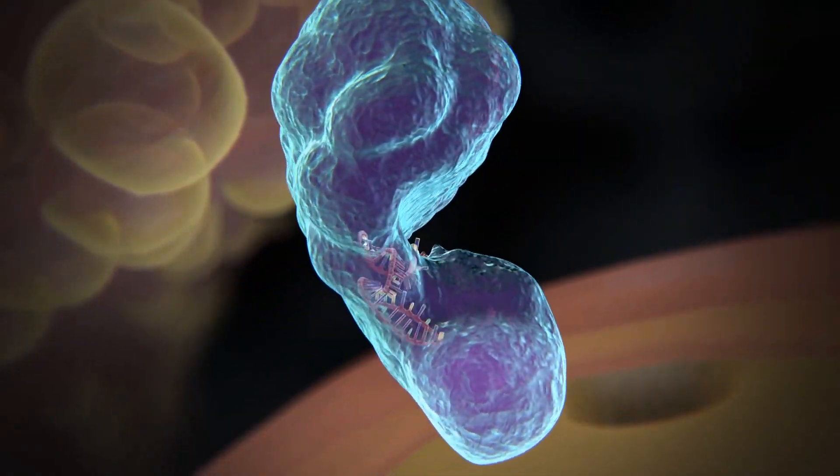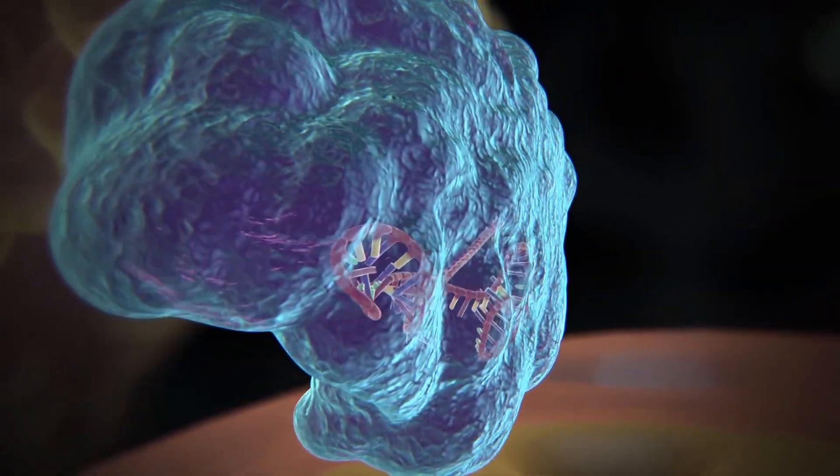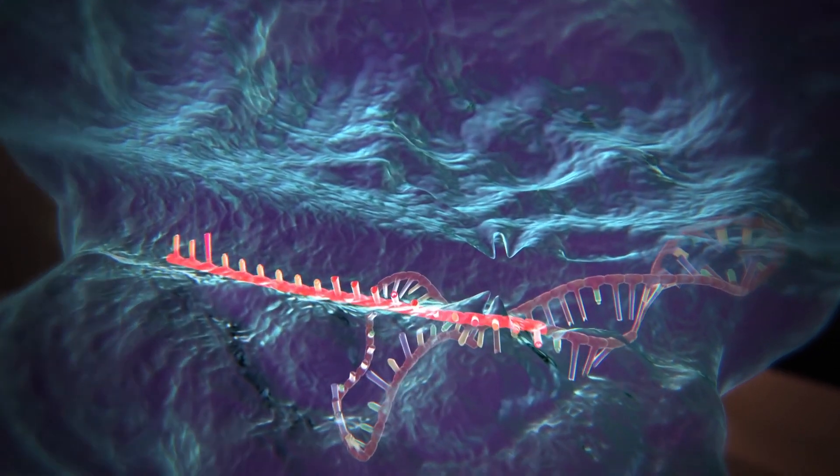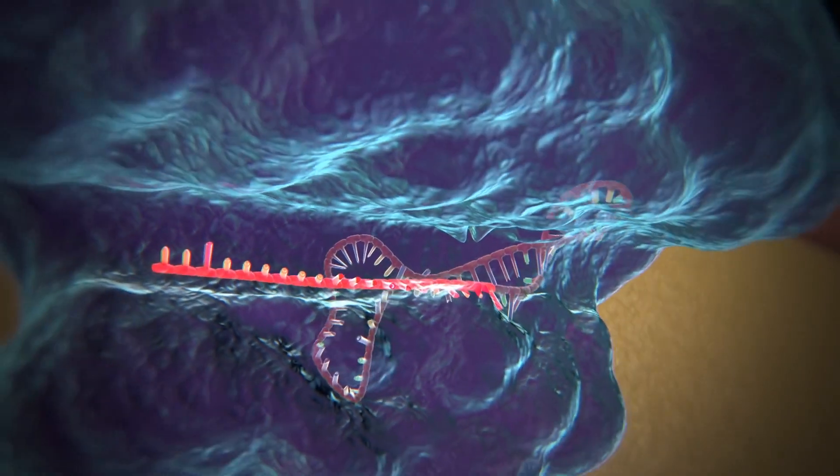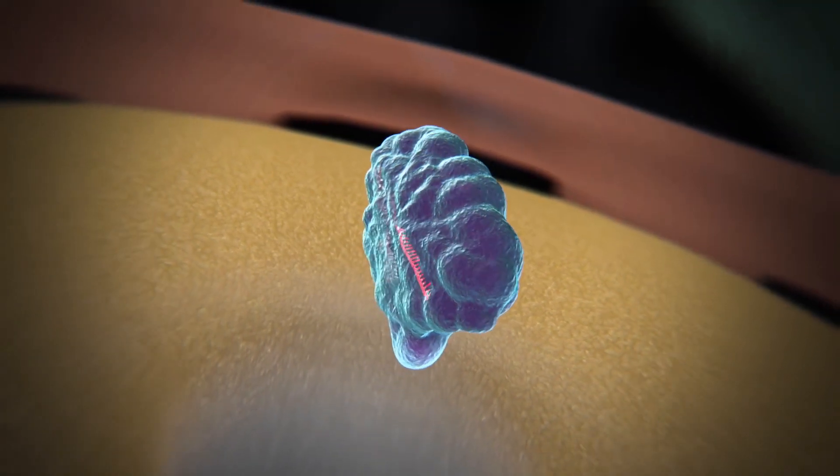Over the past few years, researchers studying the system realized that it could be engineered to cut not just viral DNA, but any DNA sequence at a precisely chosen location by changing the guide RNA to match the target. And this can be done not just in a test tube, but also within the nucleus of a living cell.